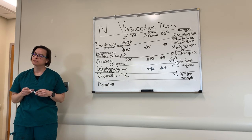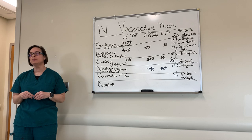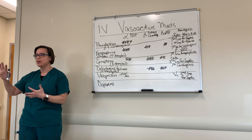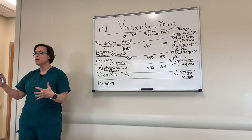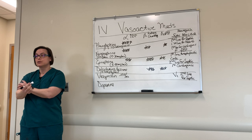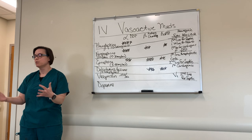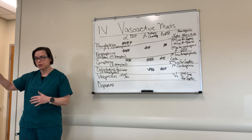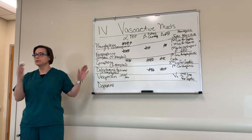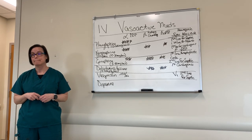A student asks how we measure MAP to titrate these medications. In many settings, you can't immediately set up an arterial line with full monitoring. While getting these medications going, it's acceptable to use a blood pressure cuff as your indicator until the patient reaches the ICU and can get an arterial line. Don't withhold medications because you can't get an a-line — get them started, save the life, then get the a-line.